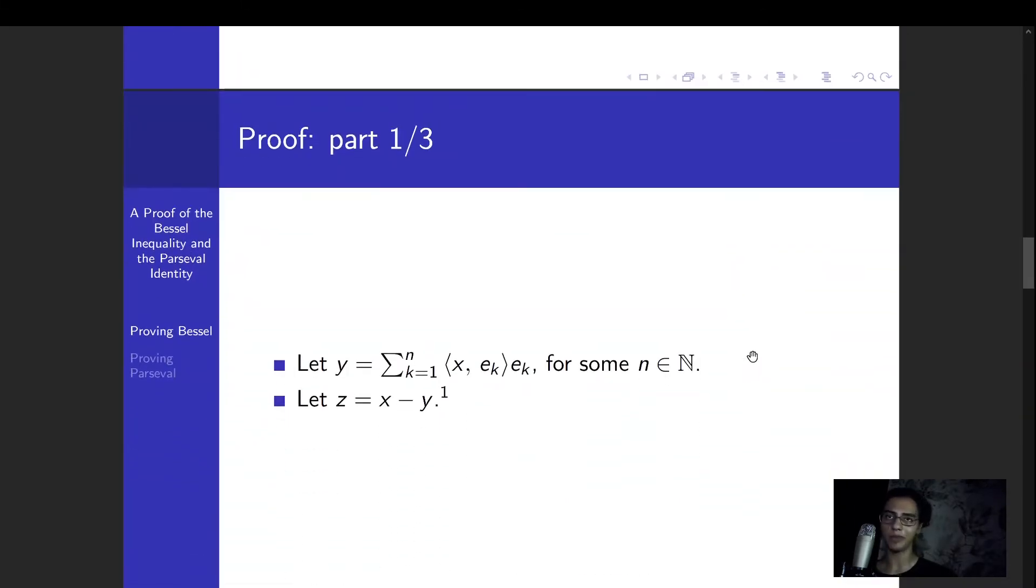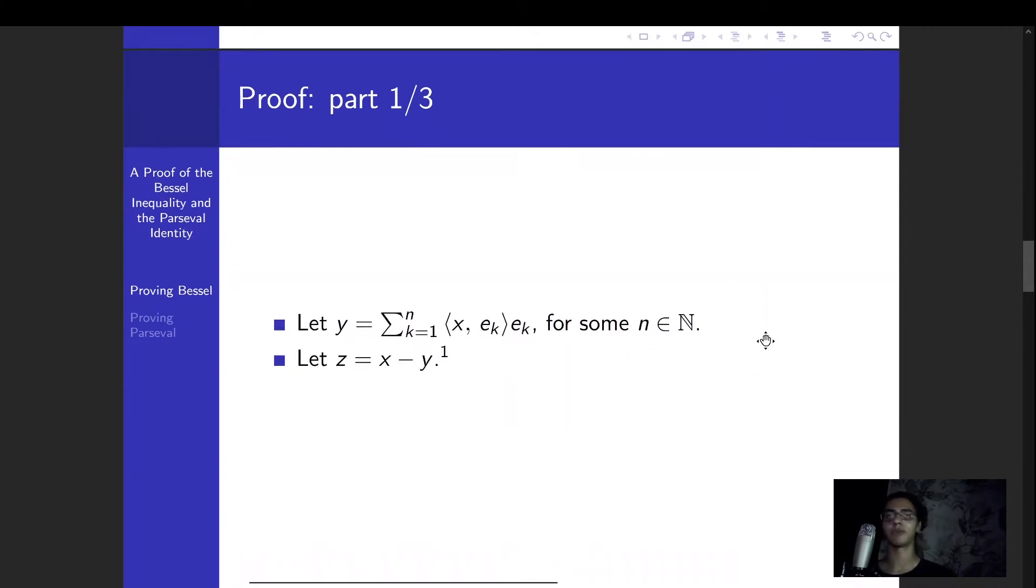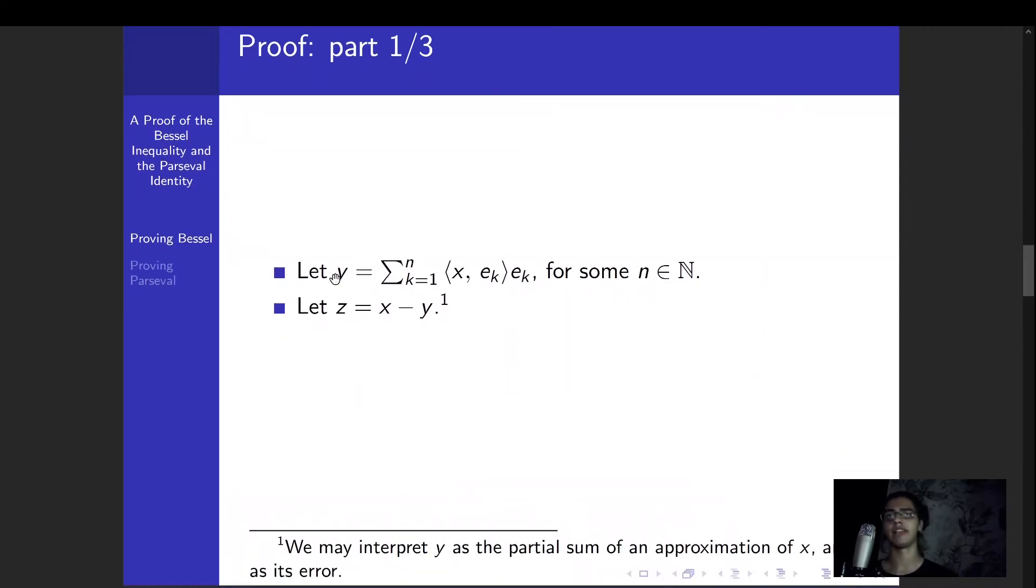Alright, so we're going to divide the proof up into three parts. The first part involves defining this y and z, which are going to be useful later. This y we're going to define as a partial sum of what looks like the abstract Fourier series of the point x.